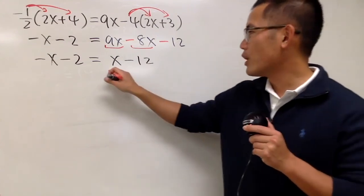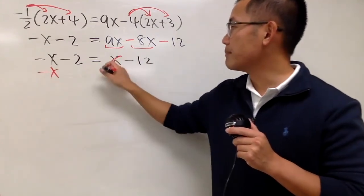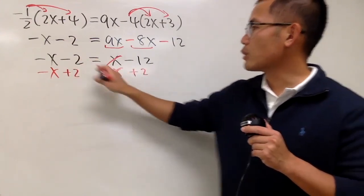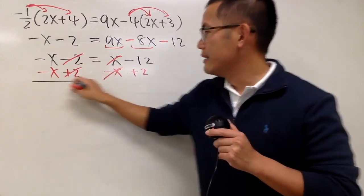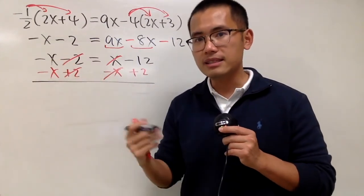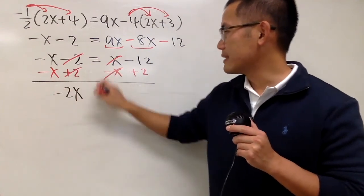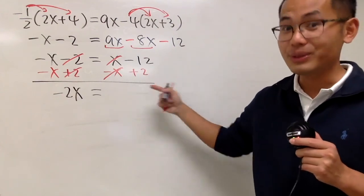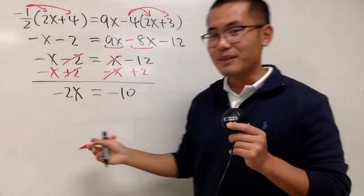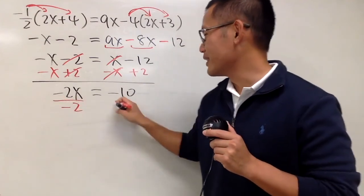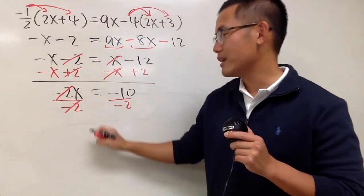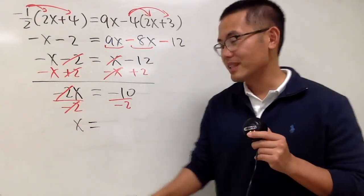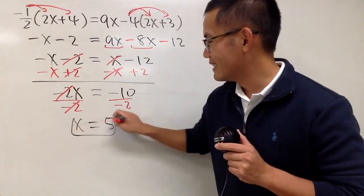We bring the x to the other side by subtracting x on both sides. In the meantime, we add 2 on both sides so they cancel. Then negative x minus x is negative 2x, and that equals negative 12 plus 2, which is negative 10. Finally, divide both sides by negative 2. Negative 10 divided by negative 2 gives positive 5. And we're done — x equals 5.